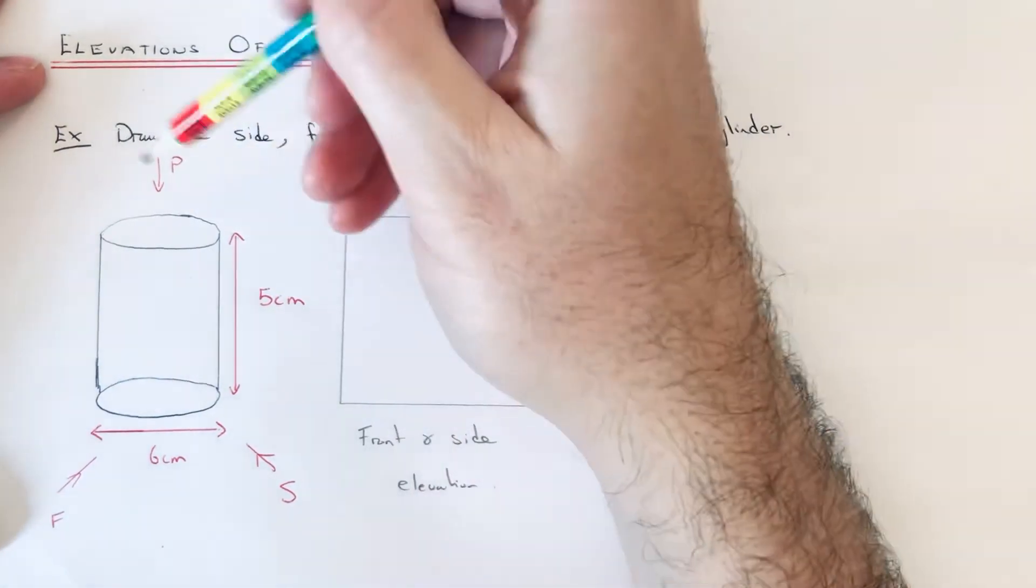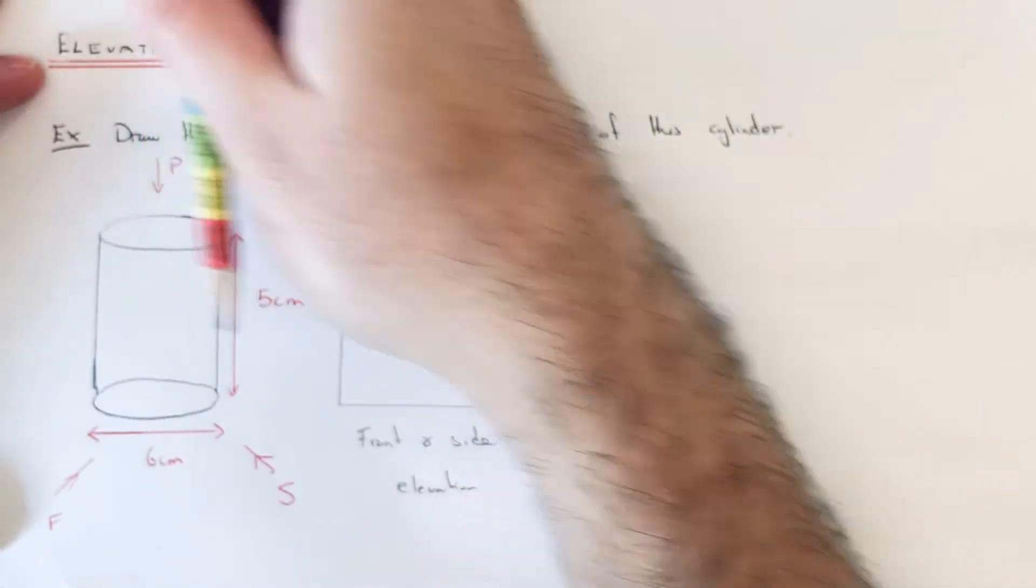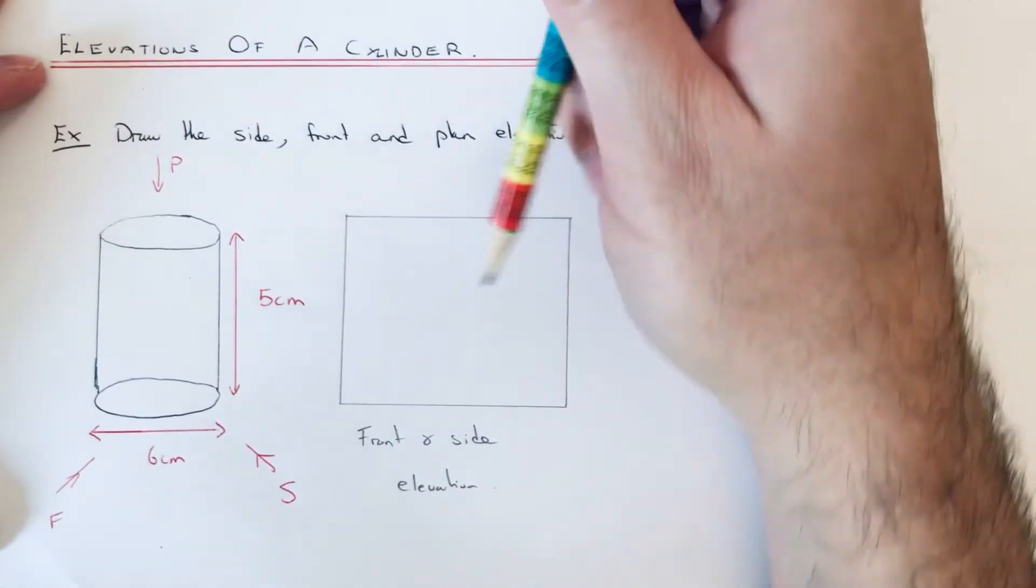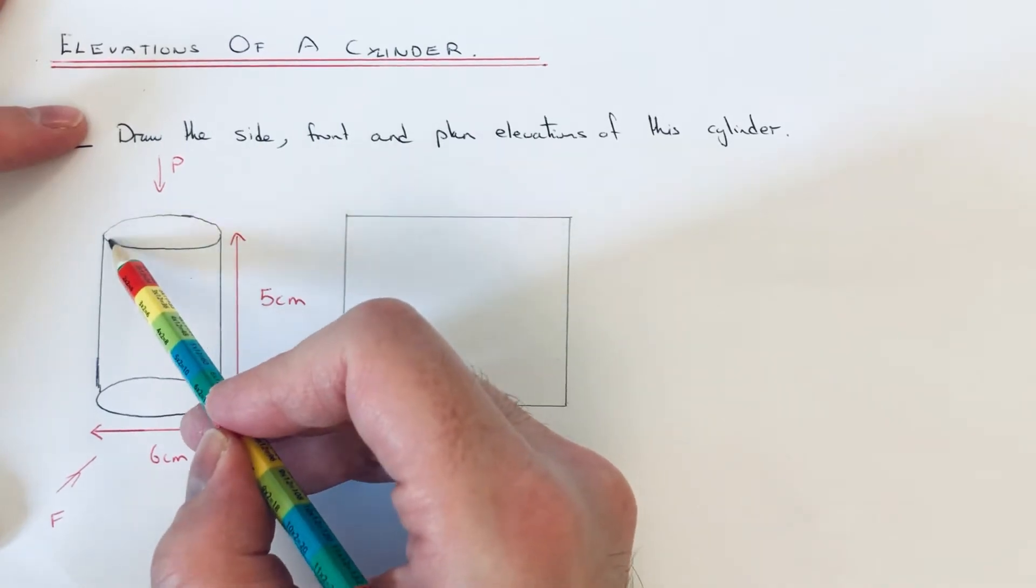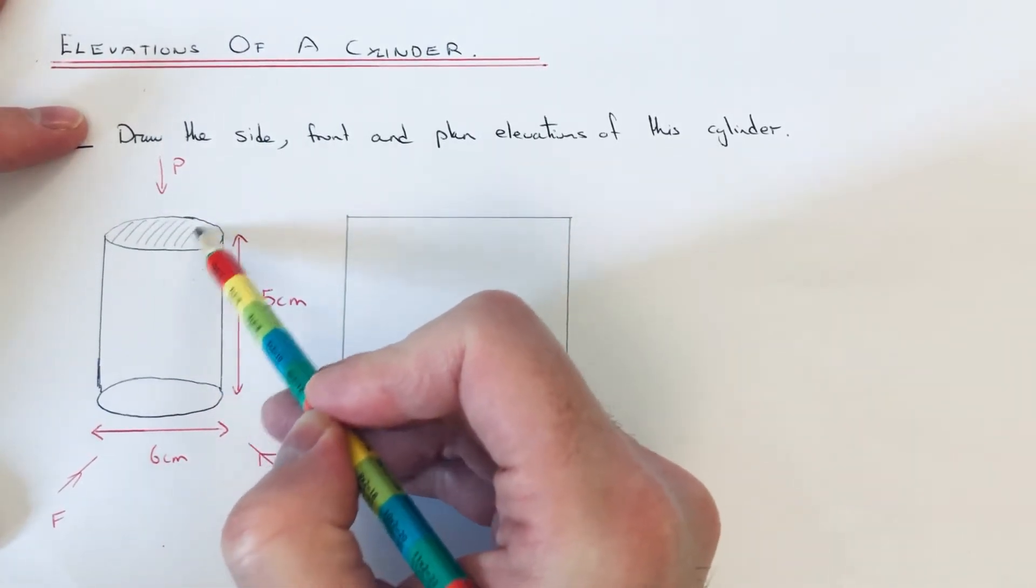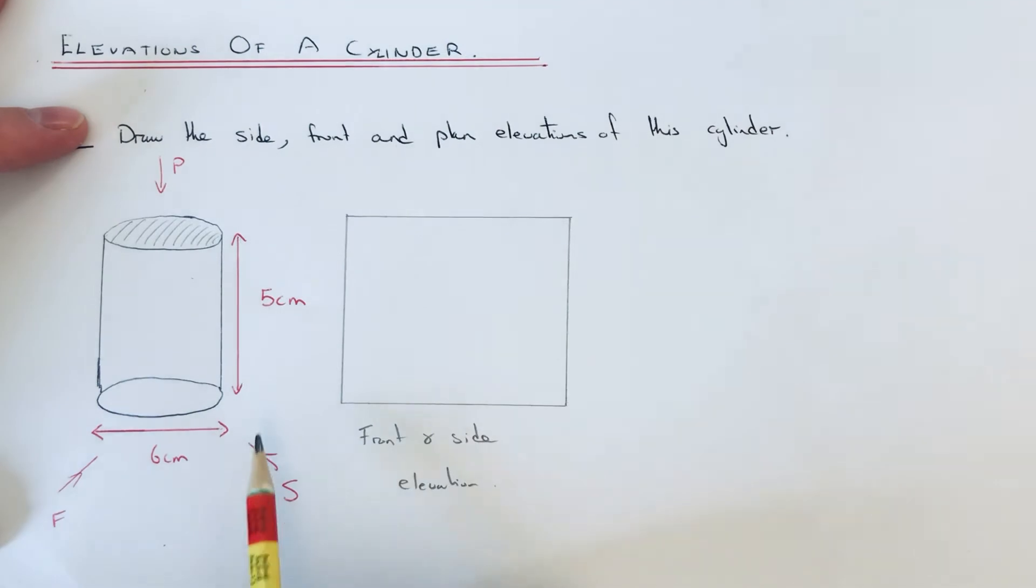The plan elevation is what you see from above the cylinder, so it's a bit like the satellite view. What you're going to see is just the circle at the top.